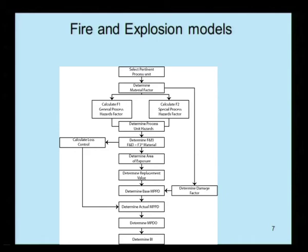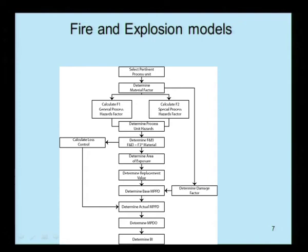For fire and explosion models: select the pertinent process unit being examined, determine the material factor, calculate F1 and F2. F1 is the general process hazards factor and F2 is the special process hazards factor. Then determine the process unit hazards, determine F and EI, then determine the area of exposure, determine replacement values, determine the MPPD, and ultimately determine the damage factor.